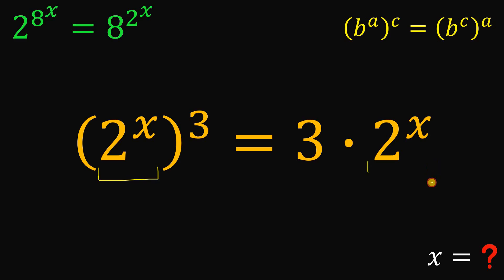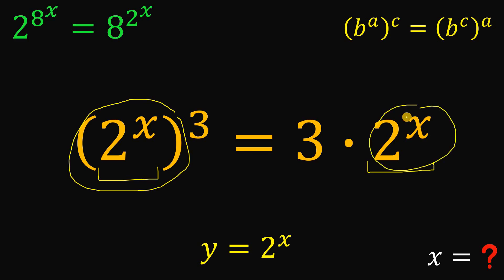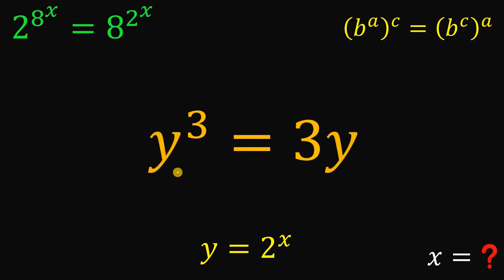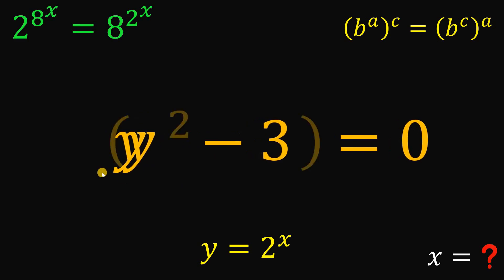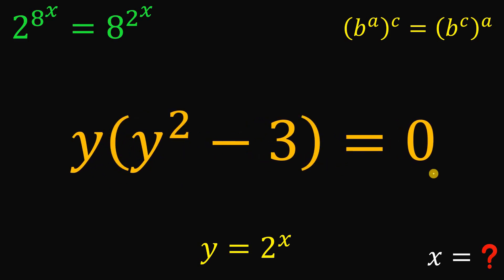Now we have a common term of 2 raised to the power of x. What we're going to do is replace this with another variable — let's call this y. So 2 raised to the power of x becomes y. So we have a cubic equation: y cubed equals 3 times y. To solve this, don't divide both sides by y — we will miss one of the possible cases. What we need to do is equate this to 0. We have a common factor of y, so let's factor out y. We get y multiplied by y squared minus 3 equals 0. Since it equals 0, we can use the zero property: y equals 0, or y squared minus 3 equals 0.